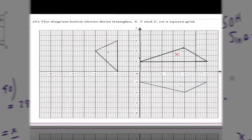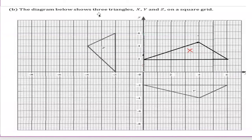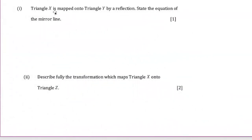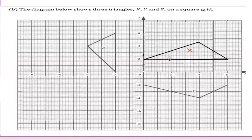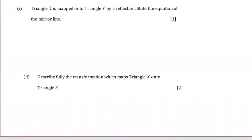The diagram below shows three triangles X, Y, and Z on a square grid. Triangle X is mapped onto Y by a reflection. This means Y is the mirror image of X, and the mirror line is y equals zero.